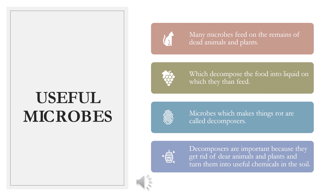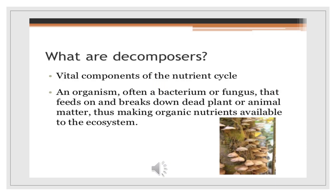Now we will study about some useful microbes. Many microbes feed on the remains of dead animals and plants, which decompose the food into liquid on which they then feed. Microbes which make things rot are called decomposers. Decomposers are important because they get rid of dead animals and plants and turn them into useful chemicals in the soil. Decomposers are vital components of the nutrient cycle — an organism, often a bacterium or fungus, that feeds on and breaks down dead plant or animal matter, thus making organic nutrients available to the ecosystem.